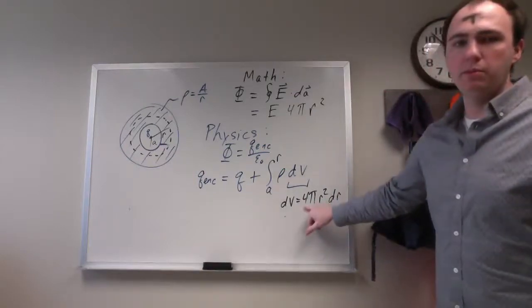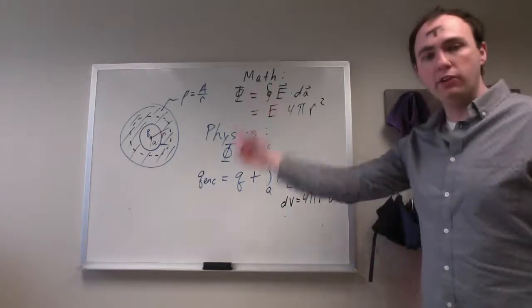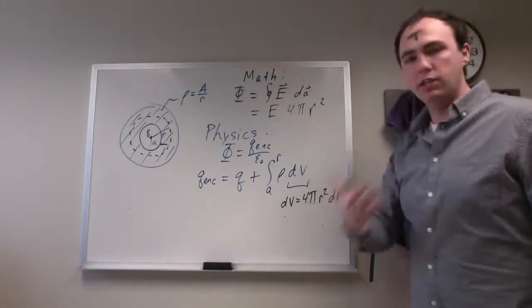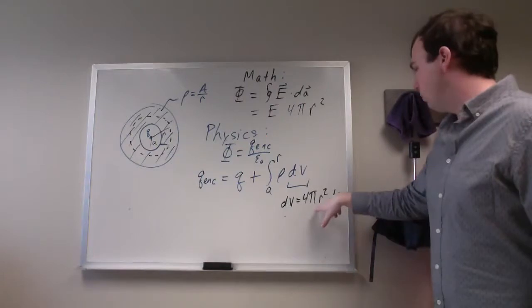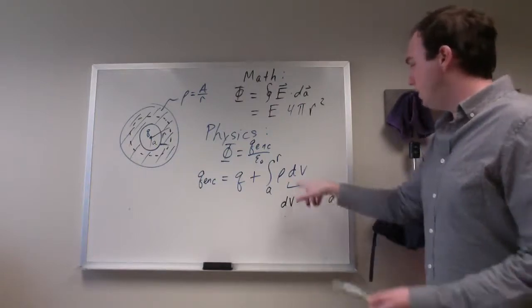And this 4 pi comes from when you do the integral over the angular part, so going around the surface area. But what we are really concerned is doing the radial part, right? So, you can plug this in here.